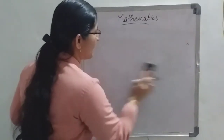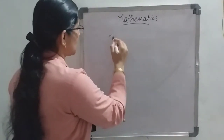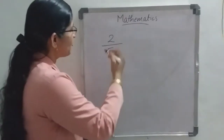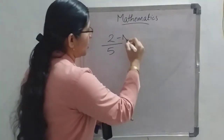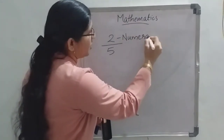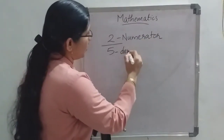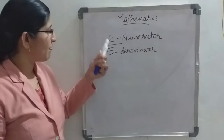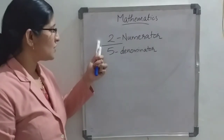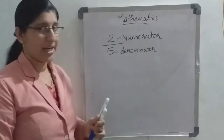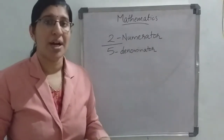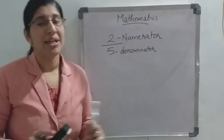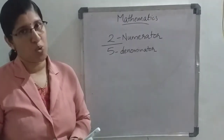There are some mathematical terms you need to study. Suppose the fraction is 2 by 5. The number written above the line — the 2 — is called the numerator. The number written below the line — the 5 — is called the denominator. Numerator means how many parts are shaded or taken. Denominator should always be the total number of equal parts.